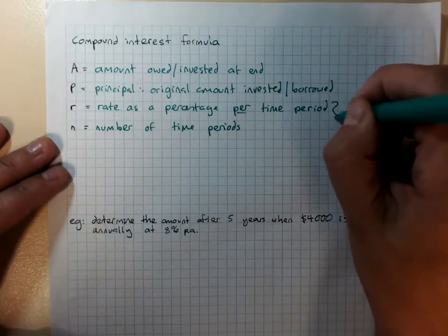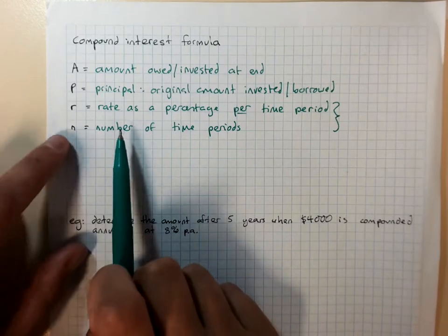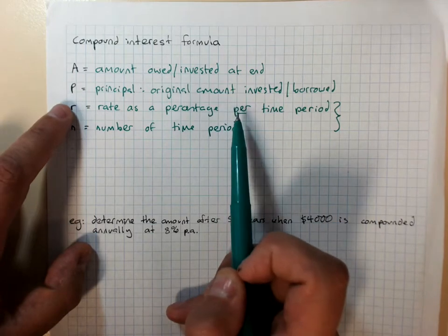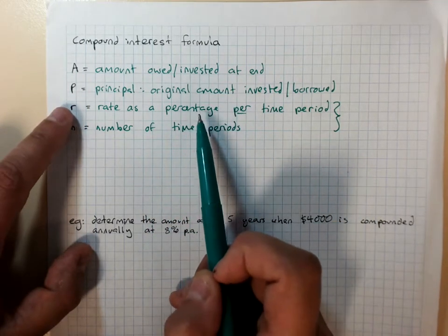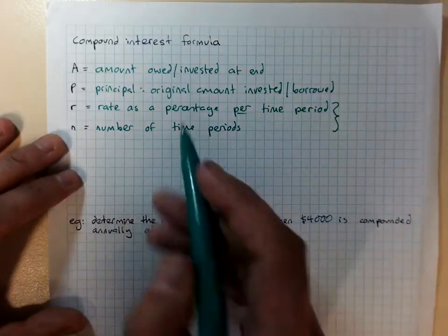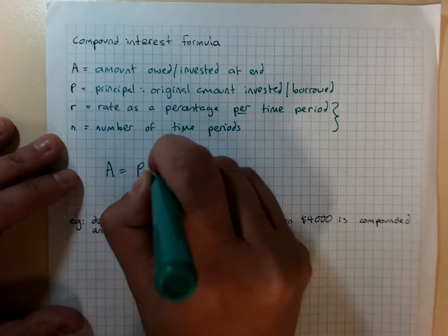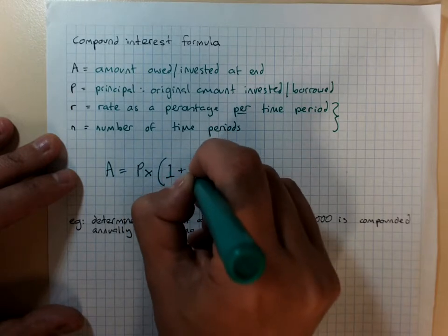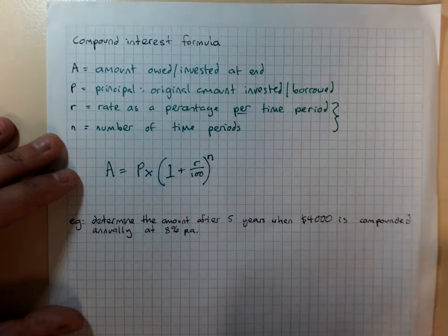And R and N have to match up with time periods. All this is saying is, if I'm calculating an interest rate per annum, we'd be looking at the number of years. But sometimes we need an interest rate per month, I'd be looking at the number of months. And the formula is A equals P times 1 plus R on 100 in brackets to the power of N.